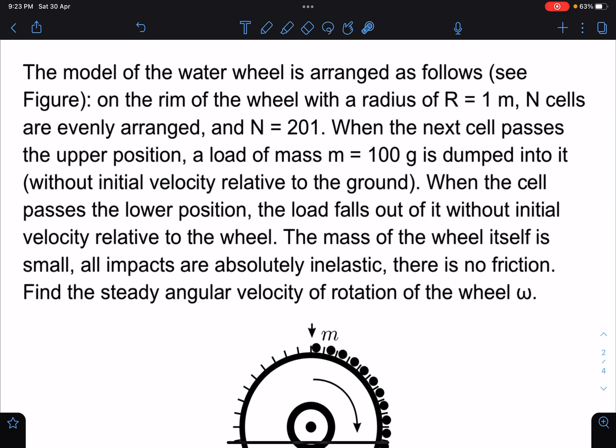The model of the water wheel is arranged as follows and on the rim of the wheel with the radius of r equal to 1 meter, n cells are evenly arranged and n value is given as 201. When the next cell passes the upper position, a load of mass 100 grams is dumped into it.